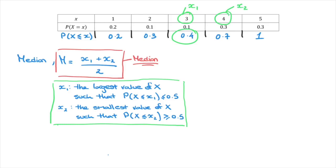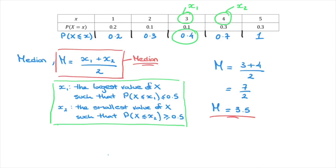Now that we have X1 and X2, we can go ahead and calculate the median. The median, capital M, is equal to 3 plus 4 over 2, which is 7 over 2. The median value of this discrete random variable is equal to 3.5. This median value is often thought of as the middle value — meaning there is a 50% chance that the discrete random variable be less than or equal to 3.5, and likewise a 50% chance that it be greater than or equal to 3.5.